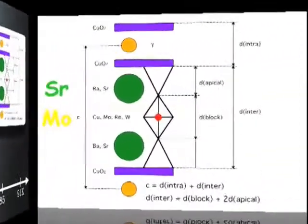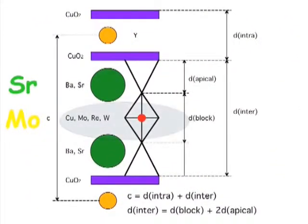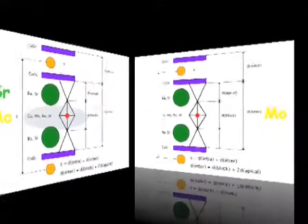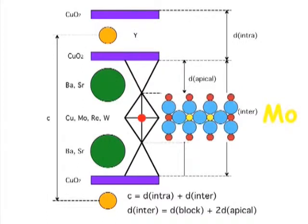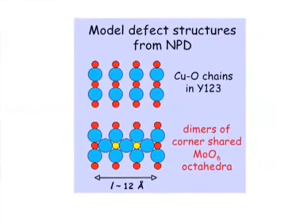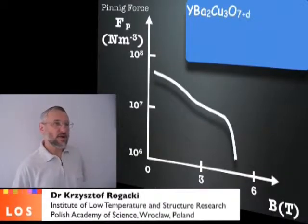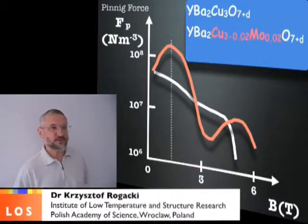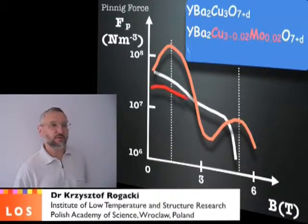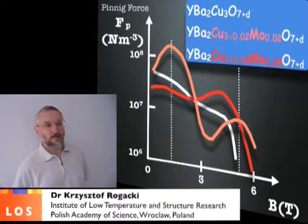The third place where we can alternate the structure for YBCO is the copper-oxide chains. By introducing molybdenum for copper in the copper chains, we create the small nanoscale defects. The defects are dimers of octahedral and these defects work as effective pinning centers. A small amount of molybdenum creates two peaks which are beneficial for the pinning force. However, too much molybdenum decreases pinning at low fields.